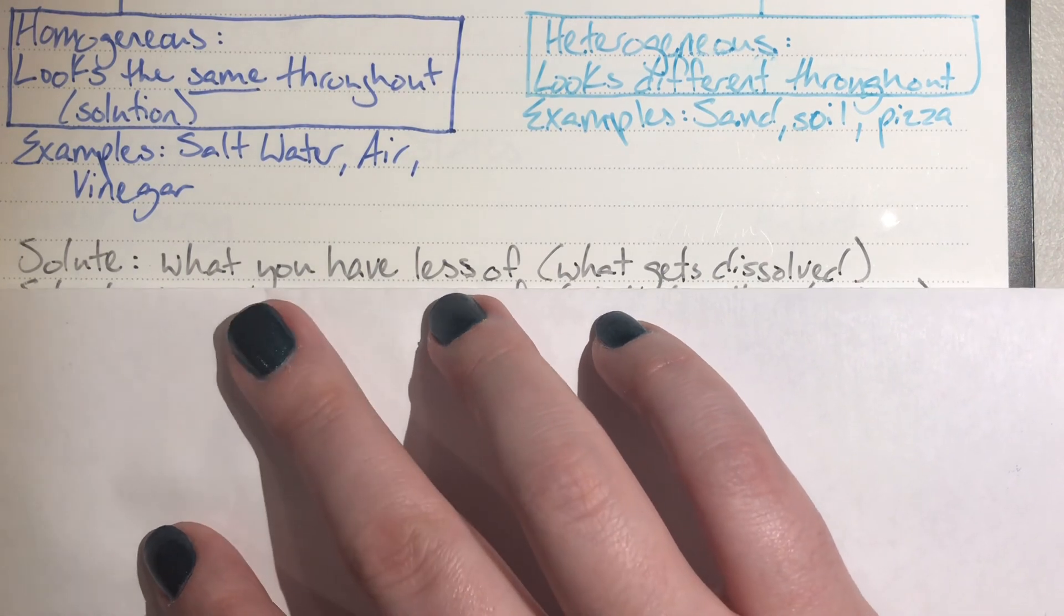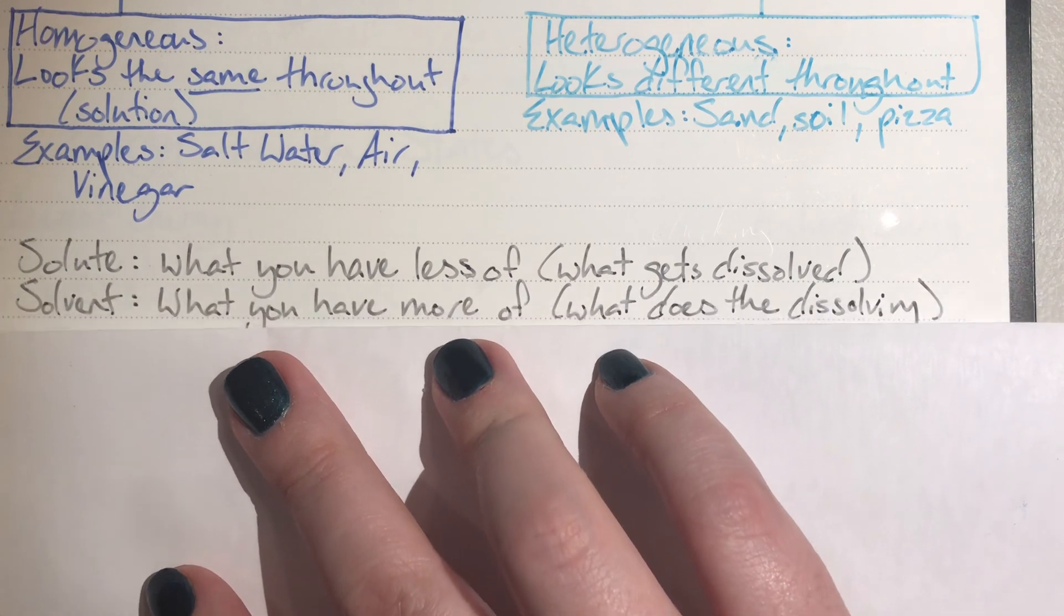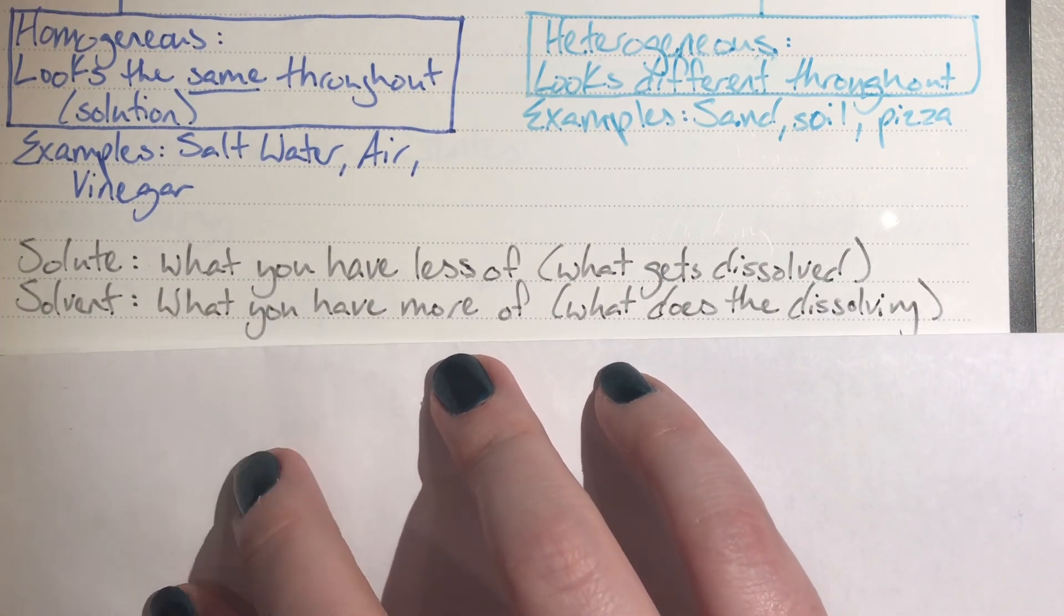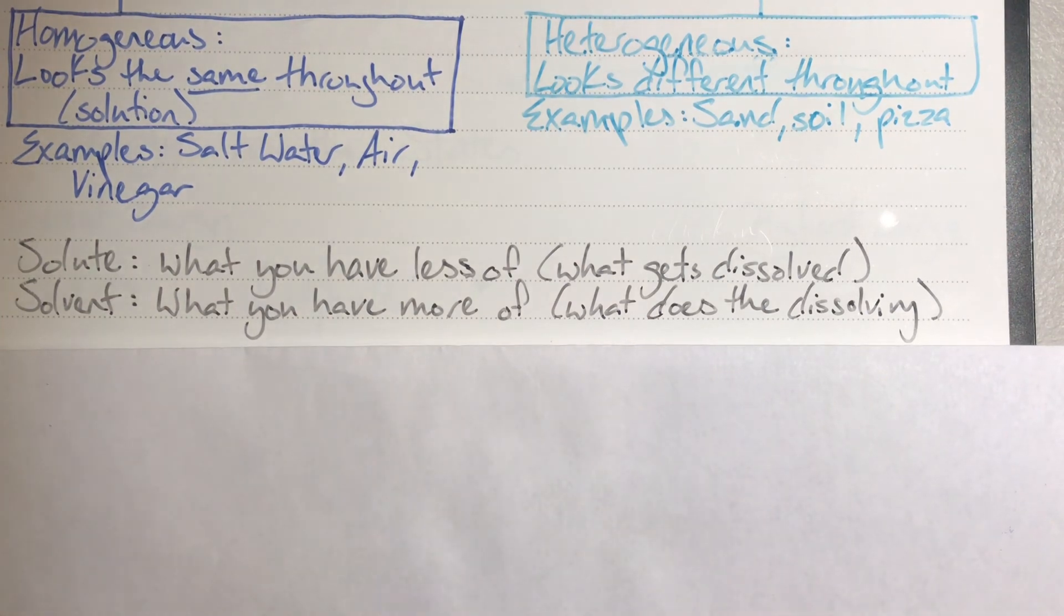The solute is what we have less of. My solvent is what I have more of. The solvent is what is actually doing the dissolving. It is generally a liquid and will generally be given in units that reflect volume such as milliliters or liters.